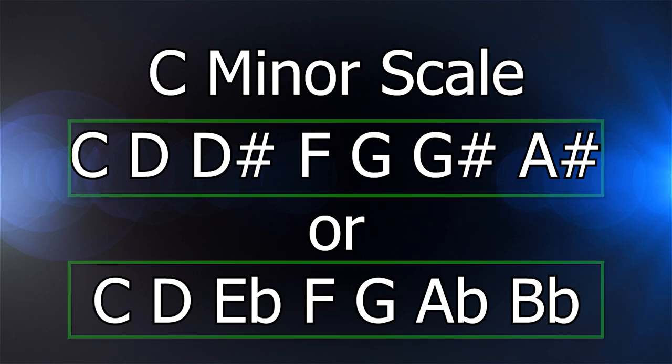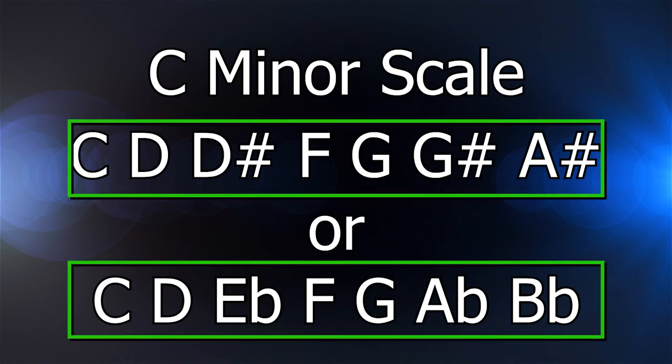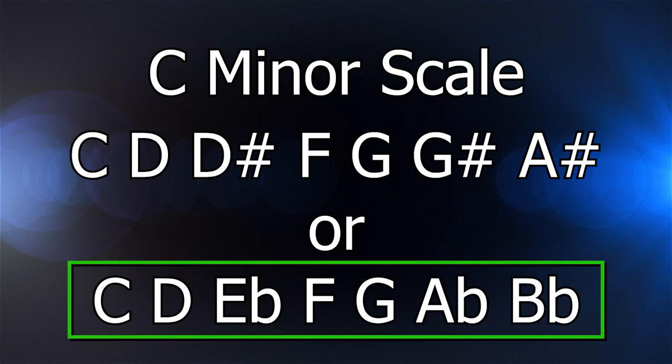On the other hand, the C minor scale could be written these two ways. In this case, we would want to take the scale with flats because it maintains C, D, E, F, G, A, B.